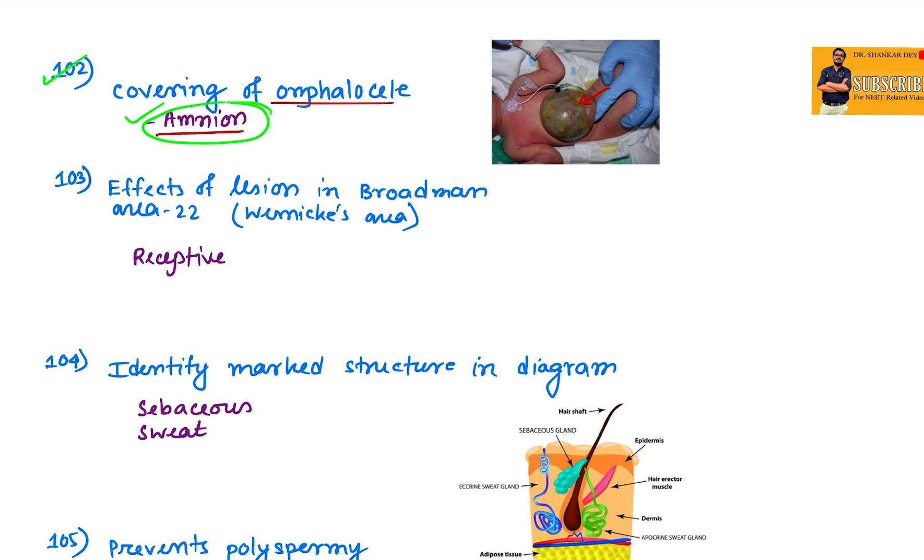Question 103: Effects of lesion in Broadman area 22, which is also known as Wernicke's area. So this is the area of comprehension, so there will be a problem in reception. This is a receptive defect.